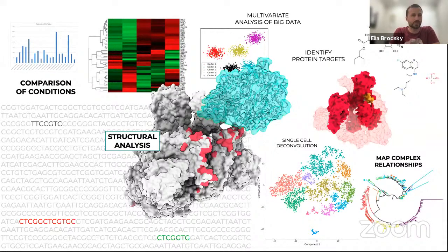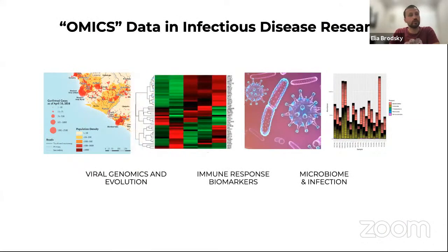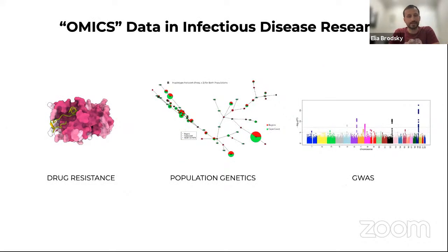Today we'll talk about next-generation sequencing data analysis to find viral pathogens. In general, it applies to viral genomics and evolution, microbiome and infection, immune response biomarkers on the host side using transcriptomic data analysis, drug resistance, and population genetics to understand diversity in pathogens. It also applies to genome-wide association studies, where we can measure the relationship between genomic variants and phenotypes.